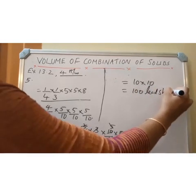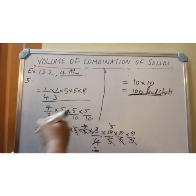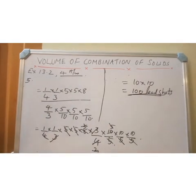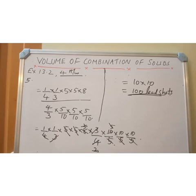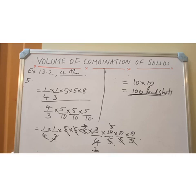So the number of lead shots is 100. You can also find the volumes of the cone and sphere separately and divide to get the answer, but directly applying the formula gives the result in two or three steps.